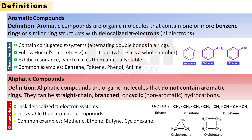4. Common examples of aromatic compounds are benzene, toluene, phenol, aniline, etc.